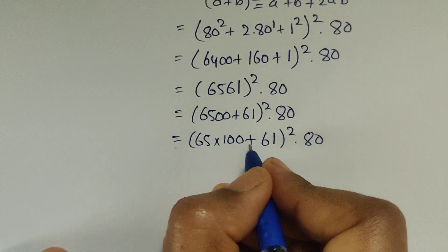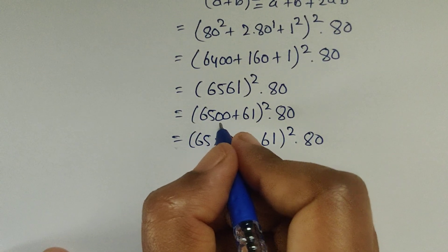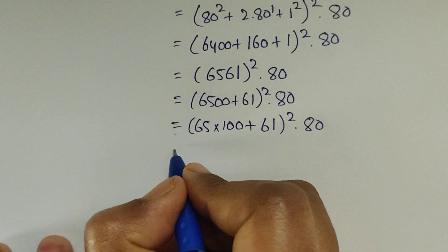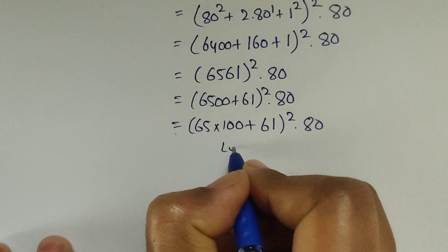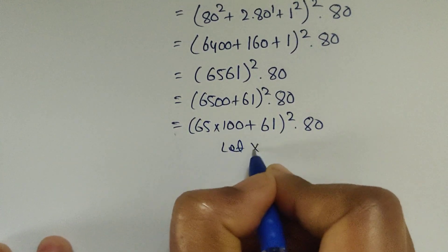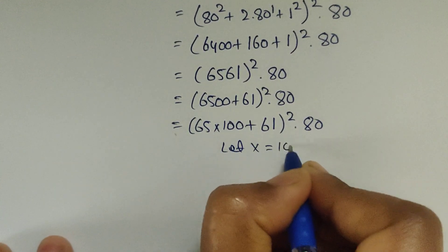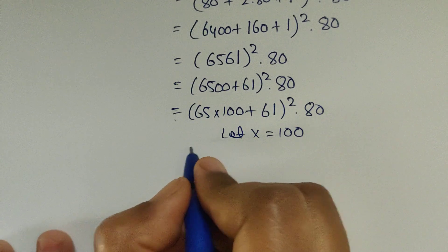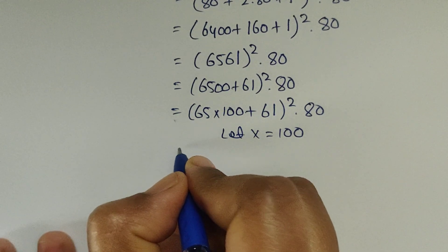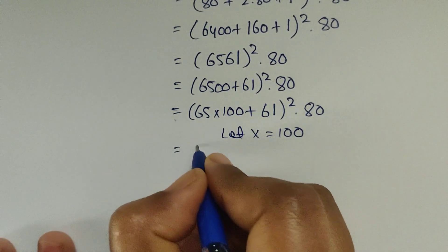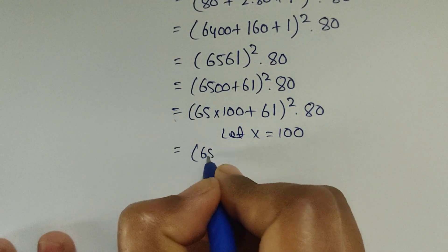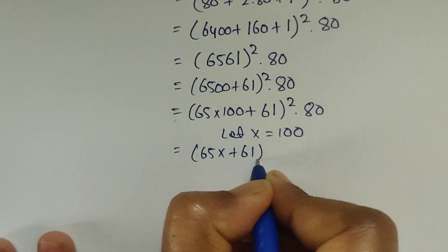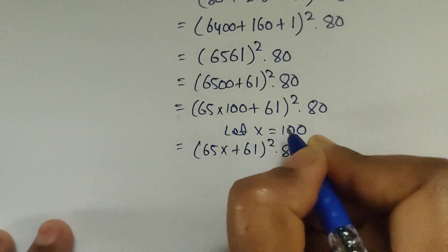So here 6500 equals 65 times 100. Let us consider x equal to 100. So 6500 equals 65x, and now it will be (65x plus 61) whole squared times 80.